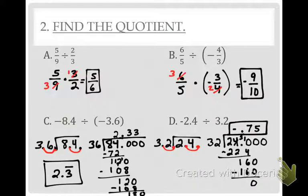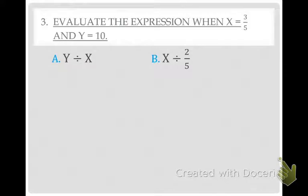Box that answer in — negative 0.75. Great job. Number three says to evaluate the expression when x equals 3 fifths and y equals 10. Repeat after me: plug it in. So we're going to plug in some numbers. Ayana, instead of a y, what will I plug in? A 10. Bring down your divide sign. And instead of an x, what will I plug in? 3 fifths.